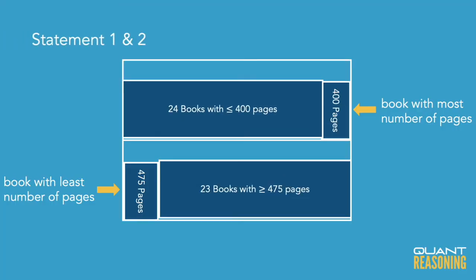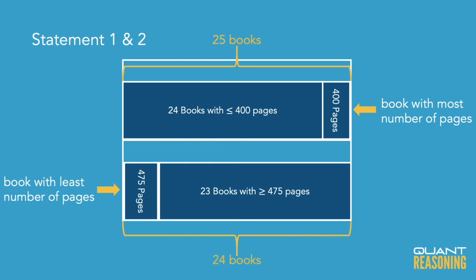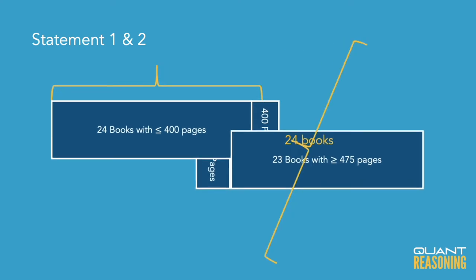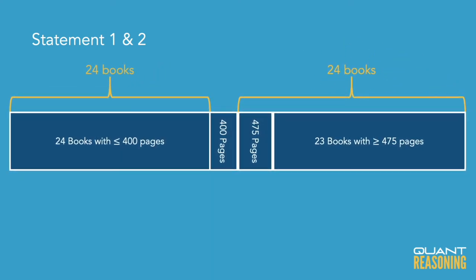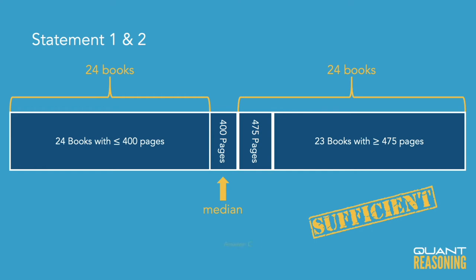When we combine these statements, it's very interesting that there is exactly one more book on the upper shelf than on the lower shelf, because that means that the heaviest book on the upper shelf would be the midpoint in the set. If we arranged all of the page counts of all 49 books in ascending order, the heaviest book on the upper shelf would be the midpoint. And we know what that book is — it has 400 pages — so the median of all the books is 400 pages, and therefore the correct answer is C.